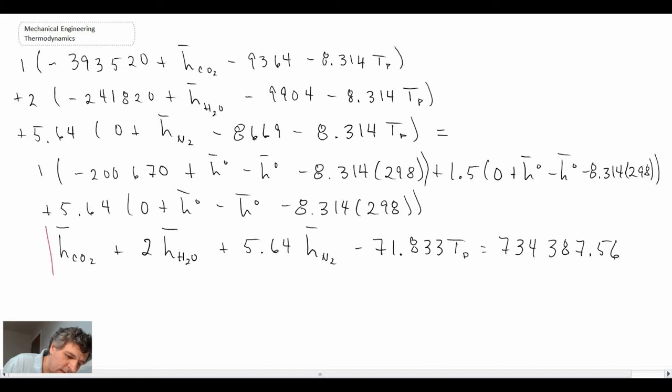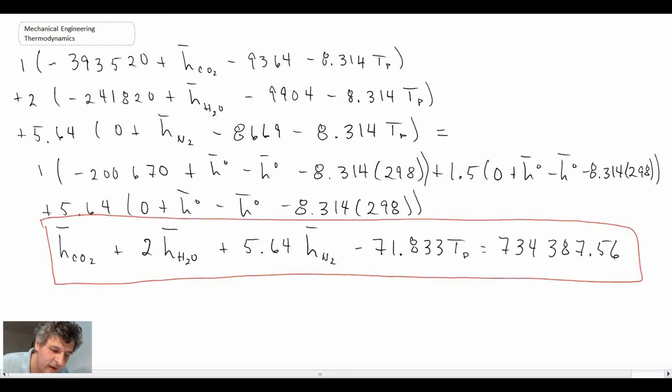So this is the equation that we get, and what you'll notice is we have the enthalpy values for carbon dioxide, water vapor, and nitrogen. These are all of the things on the product side, as well as the temperature of the product, and it's equated to some number.